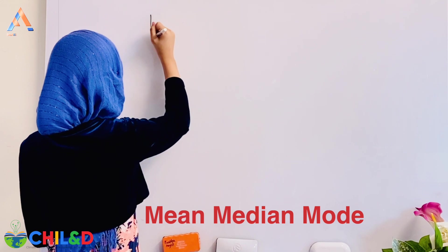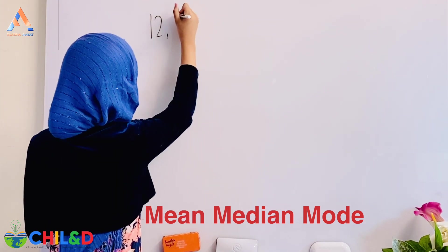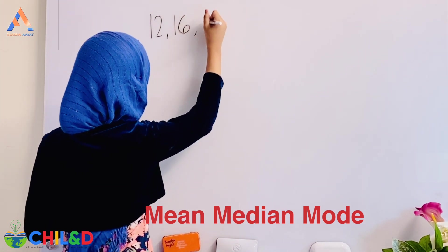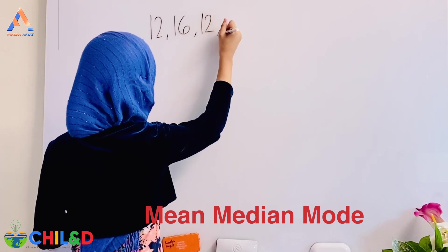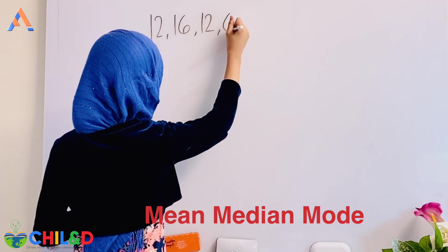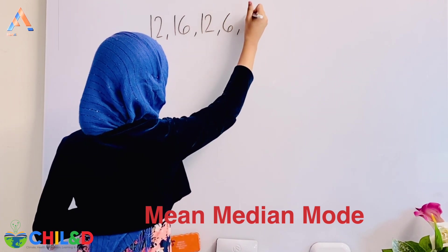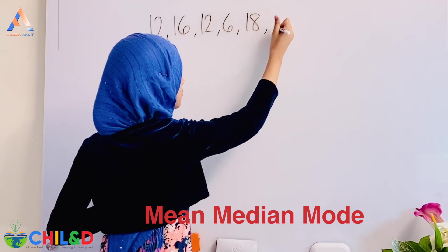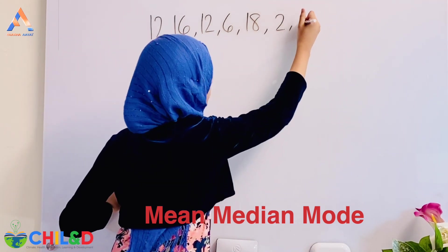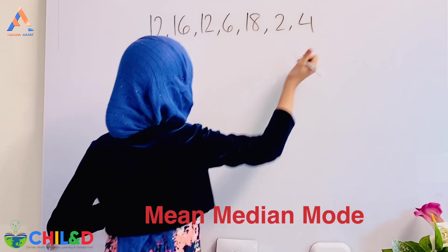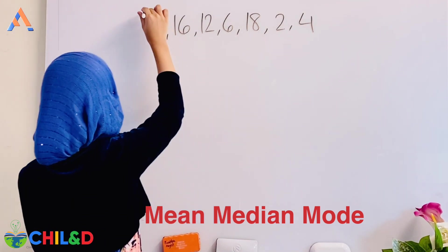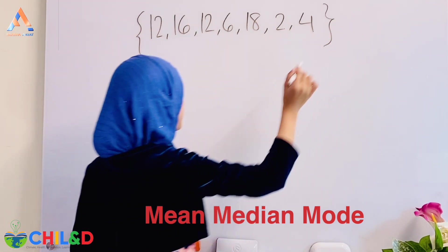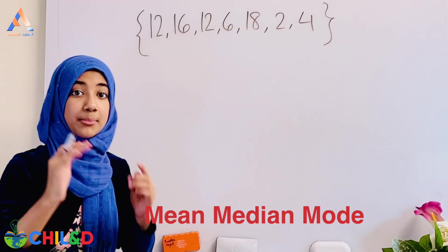The number set is: 12, 16, 12, 6, 18, 2, and 4. I'm going to put them in parentheses. This is our number set.